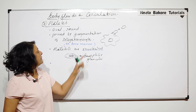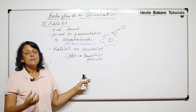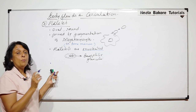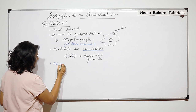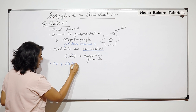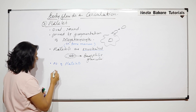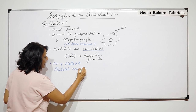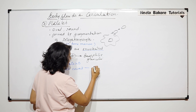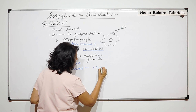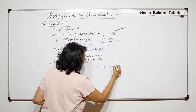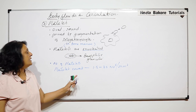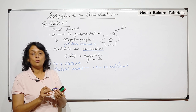The site of platelet formation is the bone marrow, because they are made from megakaryocytes which are in the bone marrow. The platelet count is 1.5 to 3.5 into 10 to the power of 5 per cubic millimeter. This is the normal range — there are so many platelets in our body.